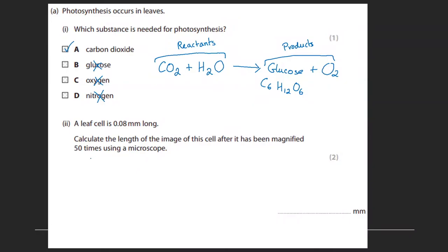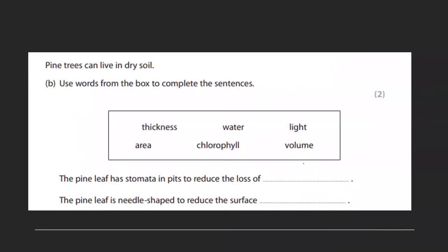So a leaf cell is 0.08 millimeters long. Calculate the length of the image of this cell after it's been magnified 50 times using a microscope. So actually this is quite a straightforward question. You can do this with a calculator. So 0.08 times 50. We don't have to even convert a unit here. So if you times that by 100 it'd be 8 millimeters, and then divided by 2 to get times 50, 4 millimeters.